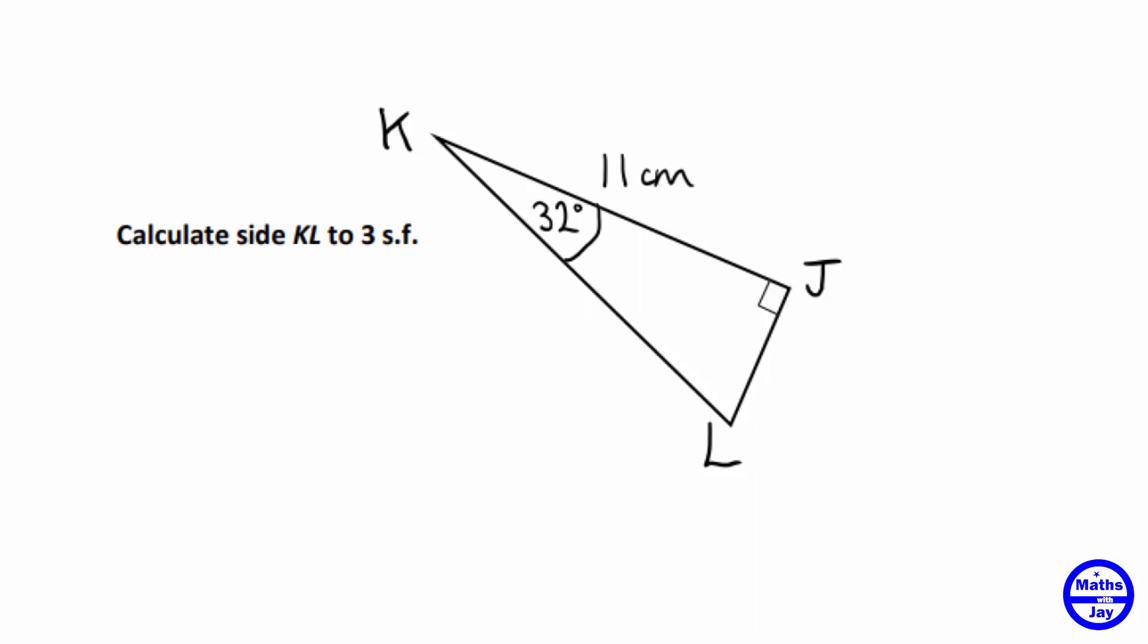It's a right angle triangle and we're given one side and one angle. So it must be that we want to use trigonometry, so one of the ratios sine, cosine or tangent.